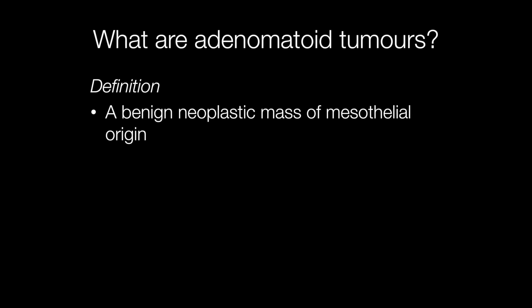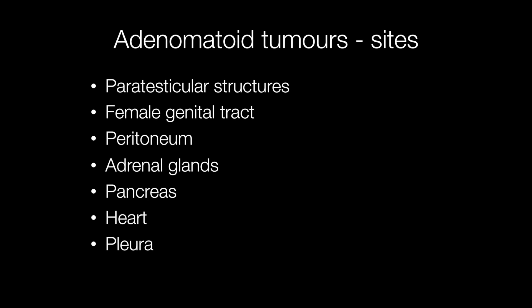An adenomatoid tumour is a benign neoplastic mass of mesothelial origin, and because of this they are only found in areas or adjacent to areas covered by mesothelium. The two most common sites for adenomatoid tumours to occur are the paratesticular structures and the female genital tract. Other sites include peritoneum, adrenal glands, pancreas, and more rarely heart and pleura.